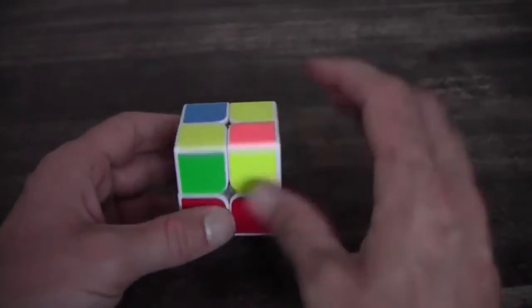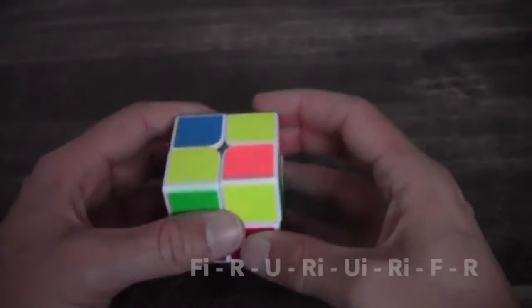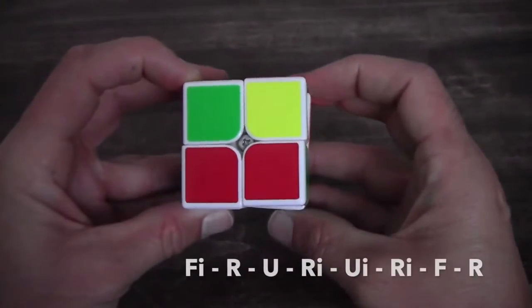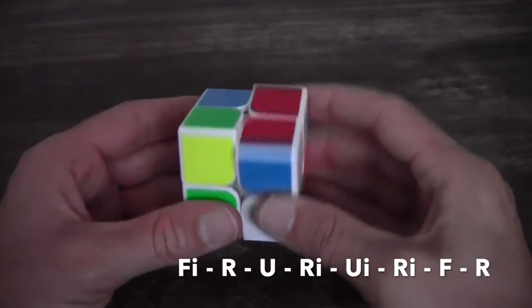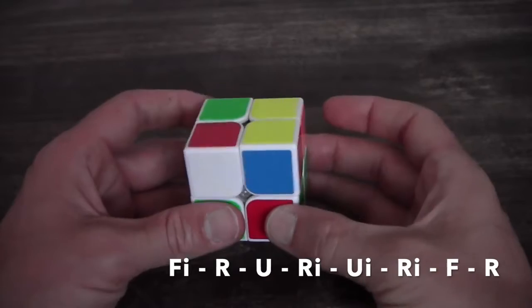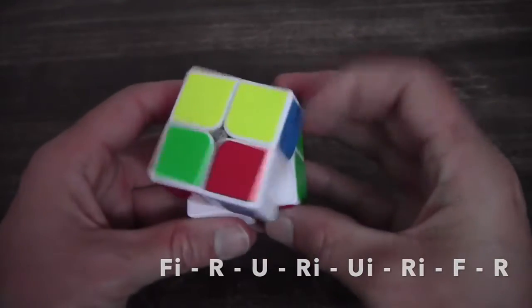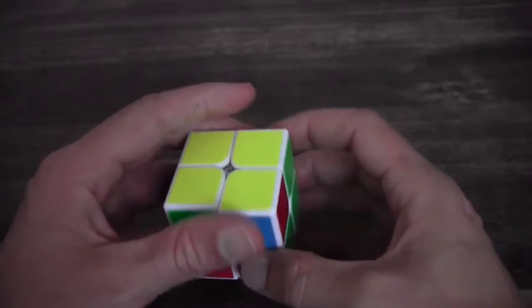So hold your cube like this with one yellow here, one here and one in front. And perform the following algorithm: F inverse sexy move R U R inverse U inverse and then R inverse F and you can fix it with an R.